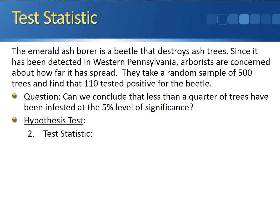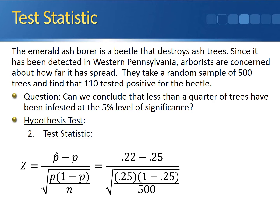Step 2 is to calculate the test statistic. The test statistic follows the standard normal distribution, so it's denoted by capital Z. We calculate it by taking the sample proportion, subtracting off the hypothesized proportion, and dividing by the square root of the hypothesized proportion times 1 minus the hypothesized proportion, divided by the sample size. This gives us 0.22 minus 0.25, divided by the square root of 0.25 times 0.75 divided by 500. The numerator is negative 0.03, the standard error in the denominator is 0.0194, giving a final test statistic of negative 1.55.